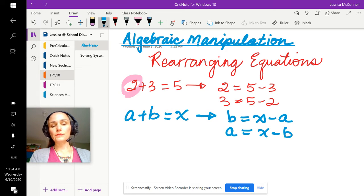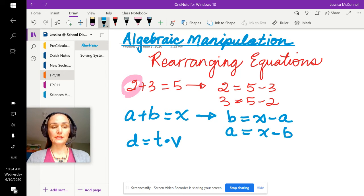A similar process works if the relationship between the three elements is multiplicative. Here's a really common one: distance equals time times velocity.